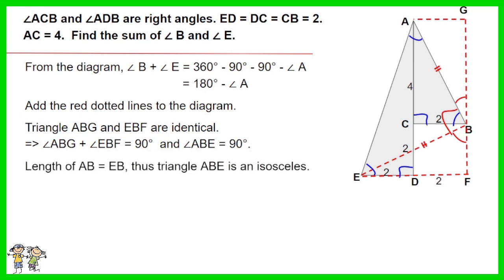The length of AB equals EB, thus triangle ABE is an isosceles. Angle B plus angle E equals 180 minus angle A equals 180 minus 45. The answer is 135 degrees.